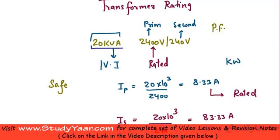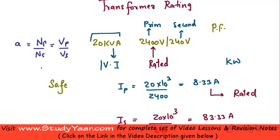When you are given a transformer rating, you are also given your turns ratio. The turns ratio is simply the number of turns in primary divided by number of turns in secondary, which is equal to voltage in primary divided by voltage in secondary. In this case, the maximum voltage in primary is 2400 and the maximum voltage in secondary is 240, therefore your turns ratio 'a' is basically 10.